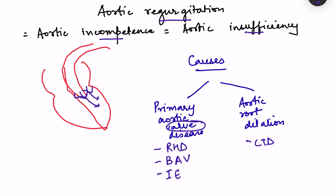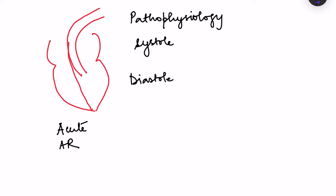Moving on to pathophysiology: the backflow of blood from the aorta into the left ventricle occurs during diastole. During systole, the mitral valve is closed and blood moves from the left ventricle into the aorta. In physiological conditions the aortic valve closes in diastole, but that doesn't happen in aortic regurgitation, leading to backflow.